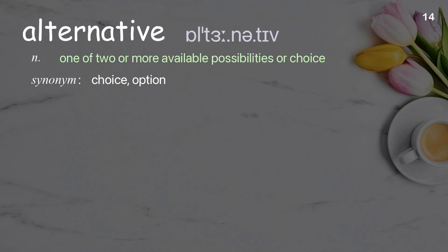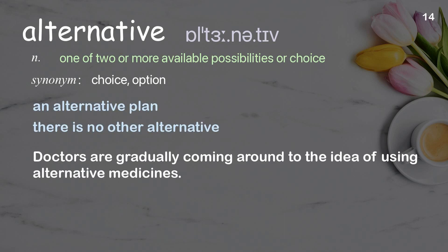Alternative: One of two or more available possibilities or choices. Examples: An alternative plan. There is no other alternative. Doctors are gradually coming around to the idea of using alternative medicines.